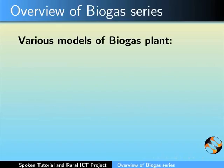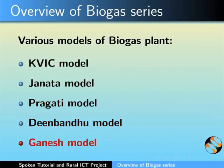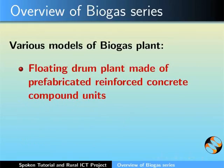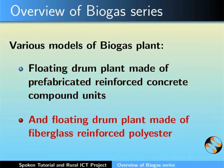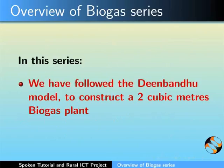There are many models of biogas plant such as KVIC model, Janata model, Pragati model, Deenbandhu model, Ganesh model, the floating drum plant made of prefabricated reinforced concrete compound units, and the floating drum plant made of fiberglass reinforced polyester. In this series, we have followed the Deenbandhu model to construct a 2 cubic meters biogas plant.